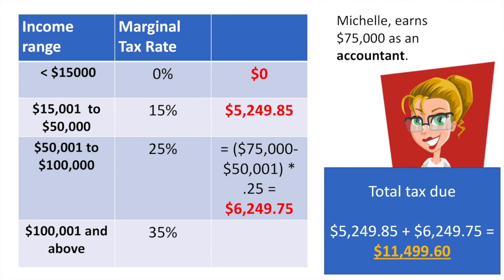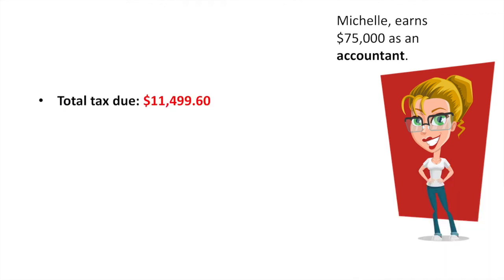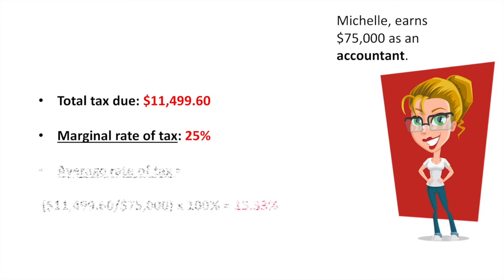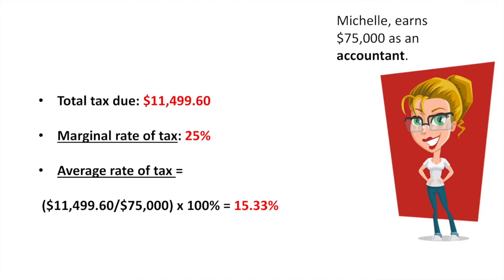Now let's calculate her marginal and average rates of taxation. The highest rate of tax Michelle hit was 25%, so that's her marginal rate of taxation. Her average rate of tax is equal to her total tax divided by her income, giving us an average rate of tax of 15.33%. As a percentage of her income, Michelle is paying proportionately less than her sister Carol — hence the progressive tax system.